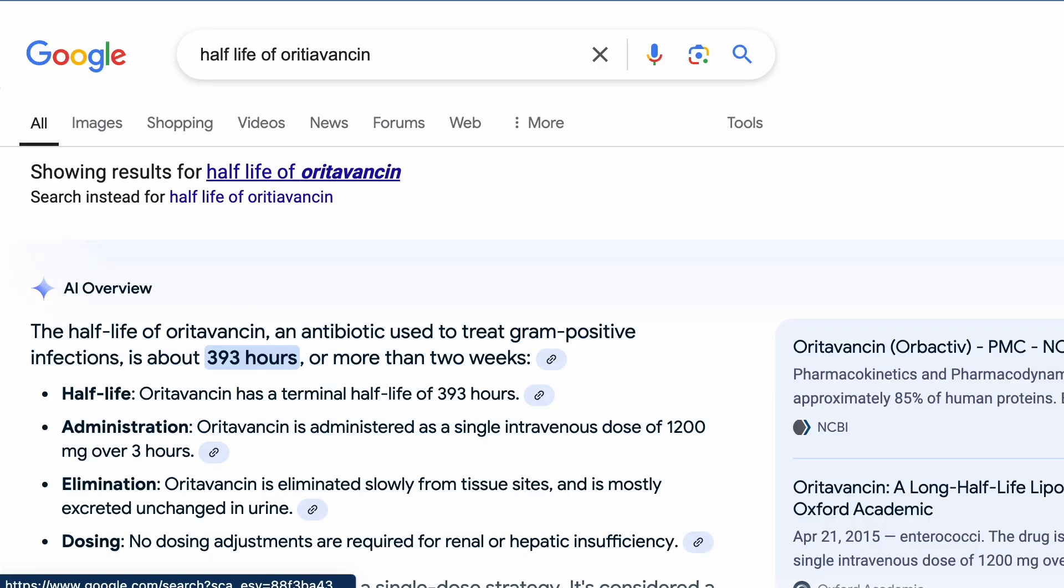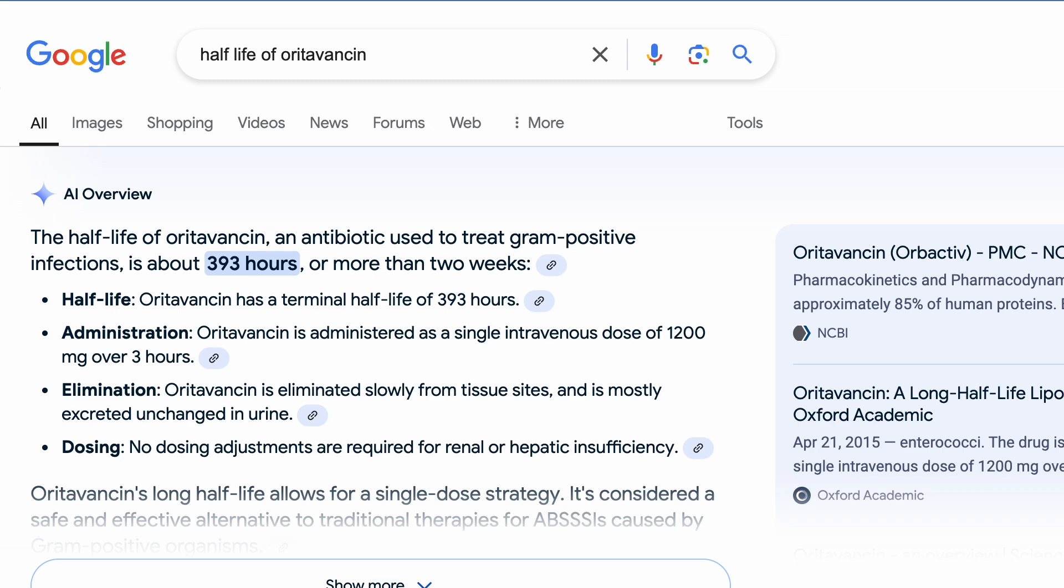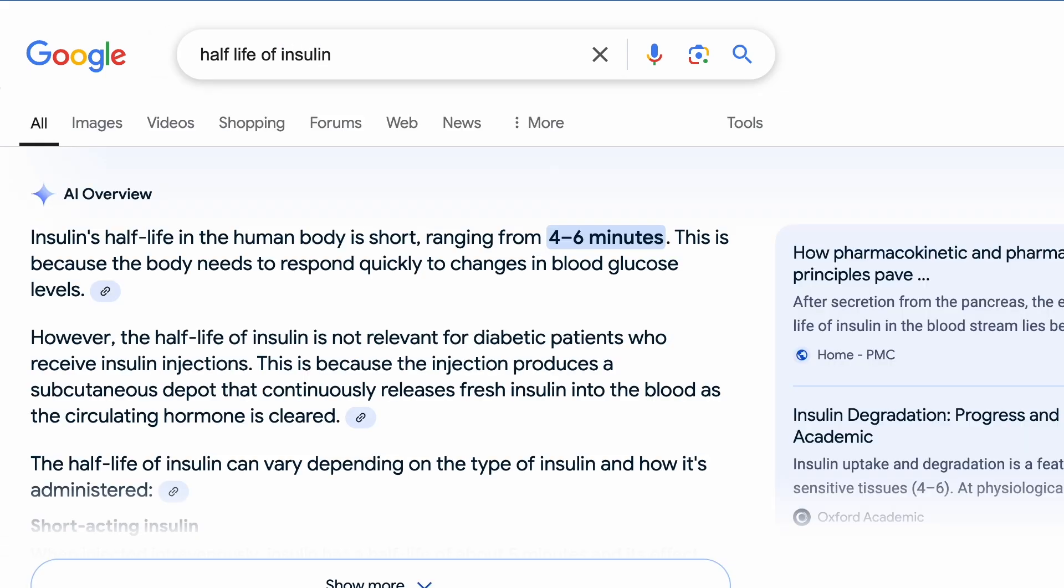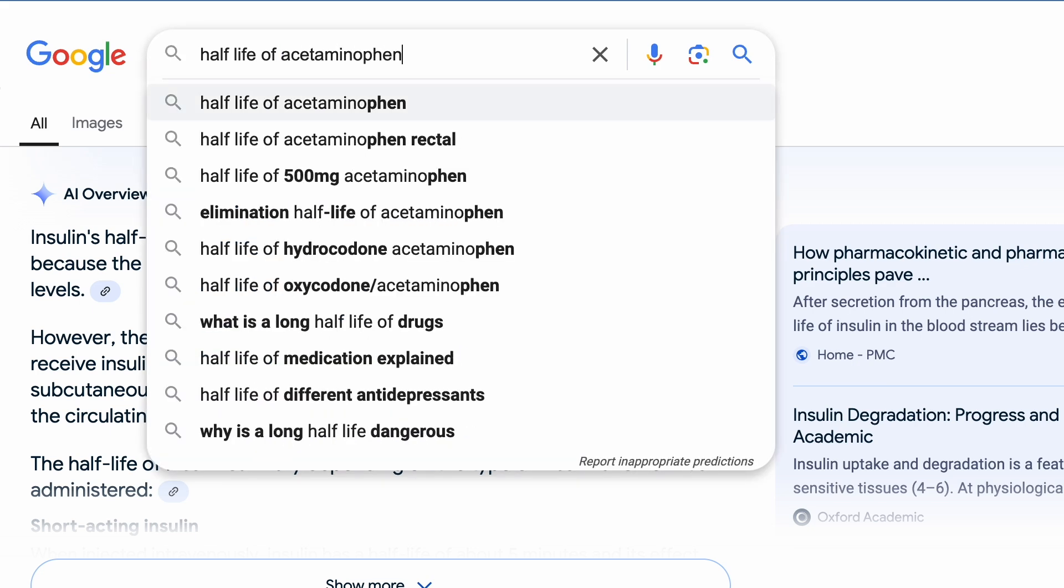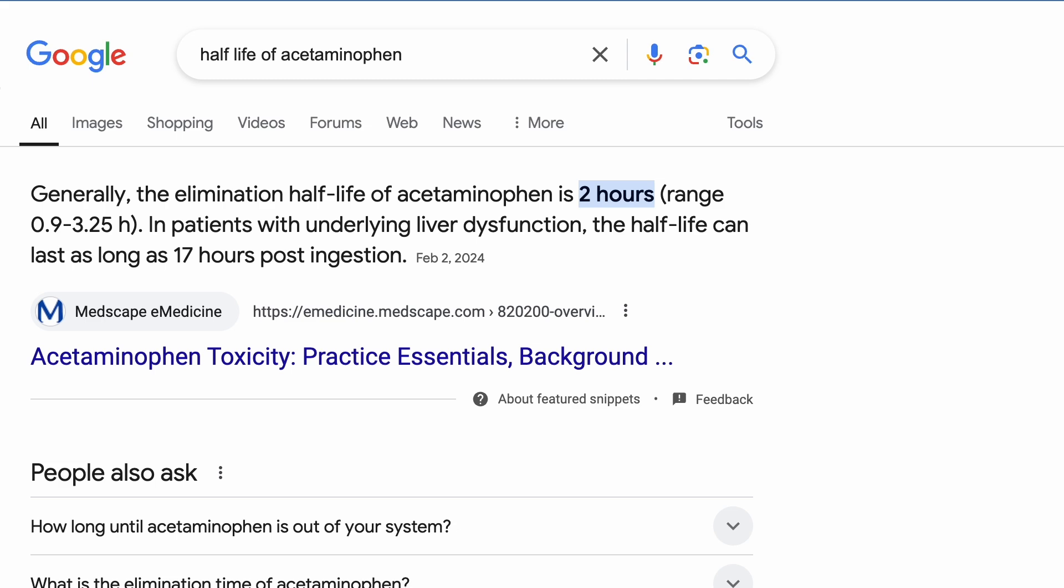Some drugs have really long half-lives. Oratovansin has a half-life of about 16 days, while some insulins have a half-life of 42 minutes. We will be analyzing acetaminophen, or also known as the brand name Tylenol, which has a half-life of about 2 hours.